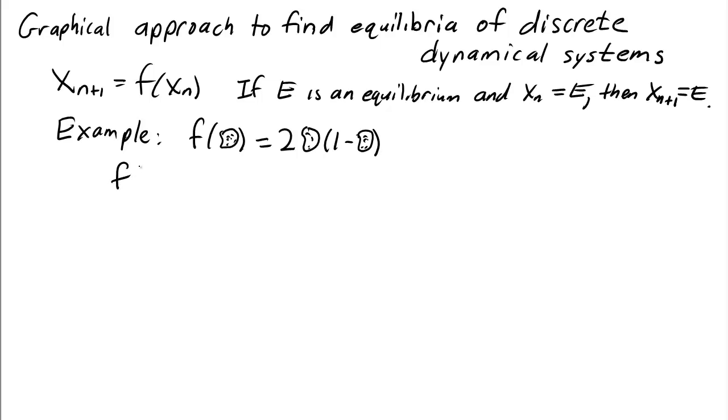then the equilibrium value E must satisfy: if you put it in the updating function, you get E back again. So in other words, 2E(1 - E), that's f(E), has to equal E.